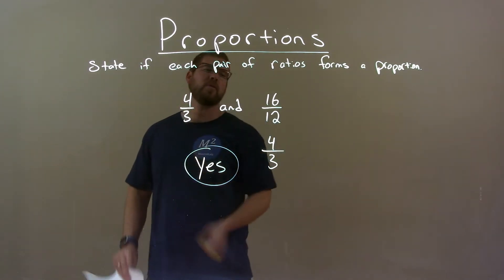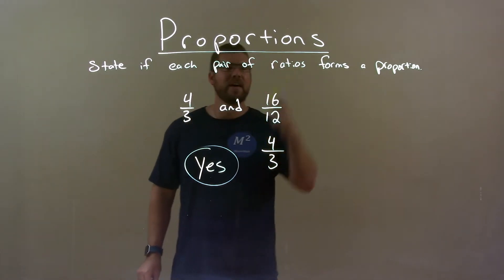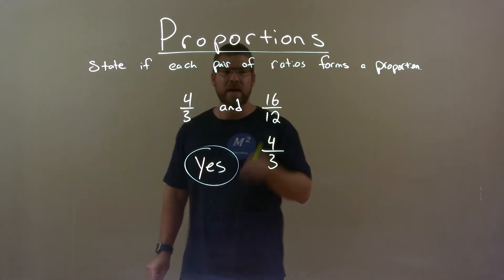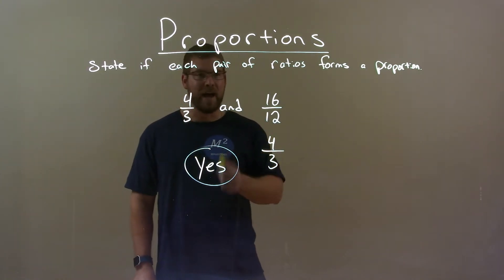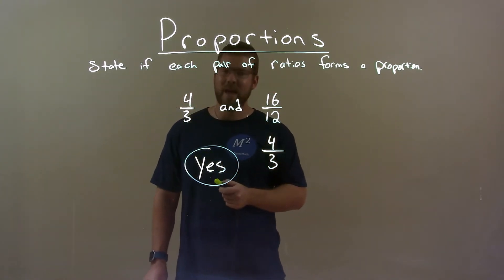Quick recap. We're given 4 thirds and 16 twelfths and we can say if they form a proportion. Well, we simplify both of them and find out that they both simplify to be 4 thirds. So, yes, these pair of ratios do form a proportion.